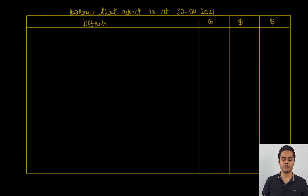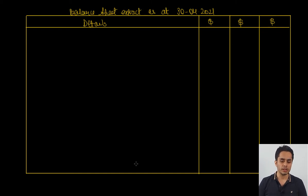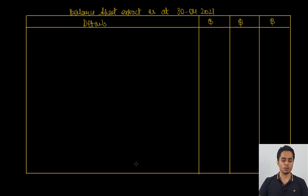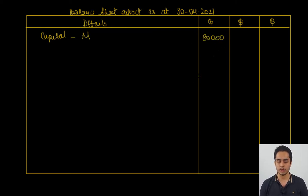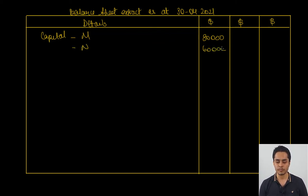We now prepare the balance sheet extract showing the presentation of capital and current account balances. We are just preparing the part of the balance sheet that presents the partners' capital and current account balances. Once the assets section is completed, we record the capital account balances: for M the capital account balance is 80,000, and for N it is 60,000, giving total capital balances of 140,000.